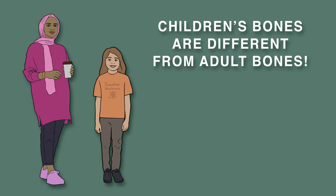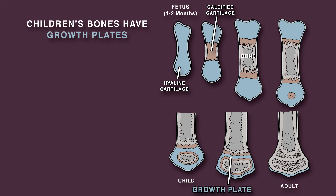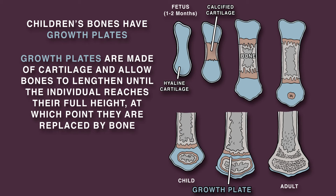Children's bones are different from adult bones. For one, they have growth plates, which are made of cartilage and allow bones to lengthen until the individual reaches their full height, at which point the cartilage is replaced by bone.